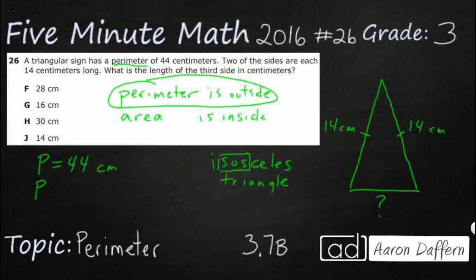So perimeter for any triangle, we'll put a little T down there, is side plus side plus side. You just add up all three sides and you have your perimeter. And guess what? We already have two of our three sides.